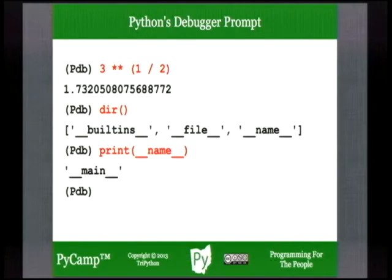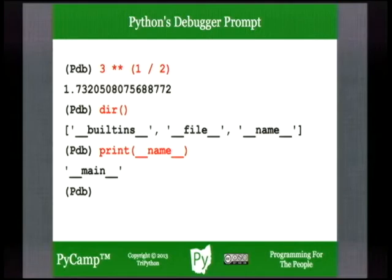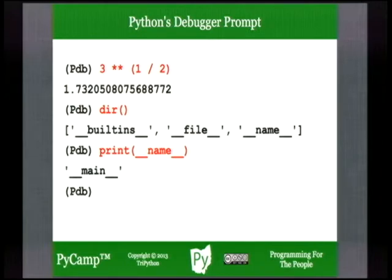When you're at the debugger prompt, you can enter arbitrary Python expressions and statements and they will be evaluated in whatever namespace your program is currently running in. When you first start the debugger, you're in the interpreter's main namespace. You can enter a numeric expression such as three raised to the one-half power to get the square root of three. In Python 2, dividing one by two results in zero — you have integer division. In Python 3, dividing two integers results in a floating-point number.